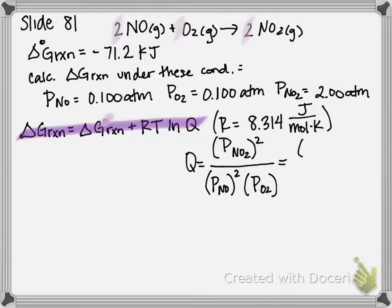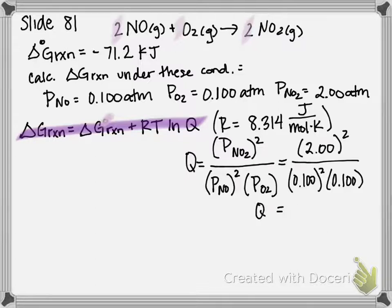So it's going to be 2 atmospheres squared over 0.1 squared times 0.1. And if I plug all of those in, I get that my Q is equal to 4,000. Remember, just like equilibrium, Q does not have a unit.